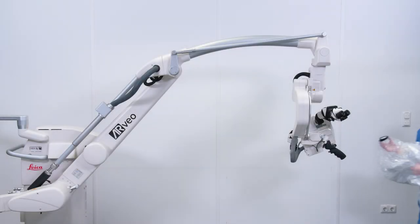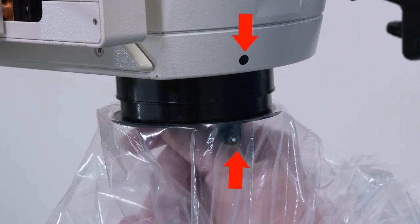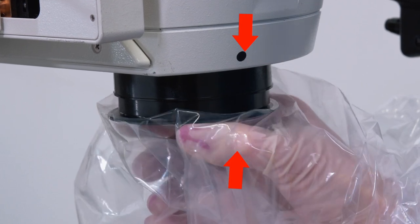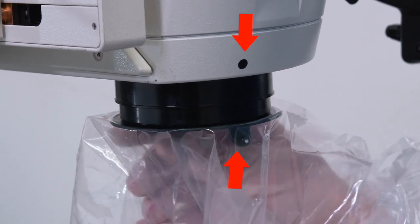Match the white dot on the lens cover with the black dot on the microscope and twist to the right until you feel it is secure and locked into place.